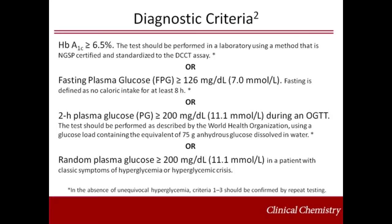The diagnosis of diabetes is established by identifying the presence of hyperglycemia. Over the last 30 years, the diagnostic criteria have been modified to better identify individuals at risk for diabetic complications. Currently, any one of the following criteria described on this slide is diagnostic for the presence of diabetes. According to the ADA, if any one of these three criteria is met, confirmation by repeat testing is necessary to establish the diagnosis.